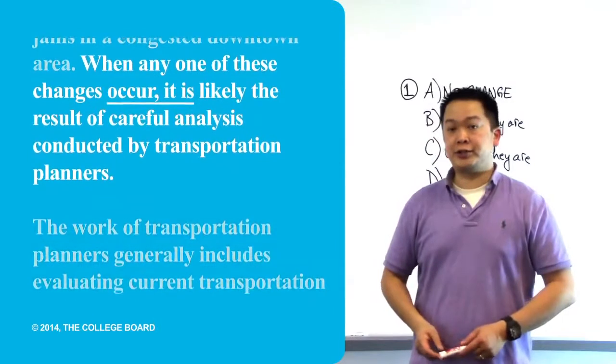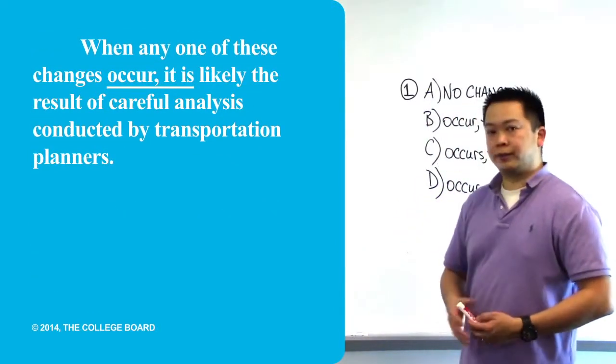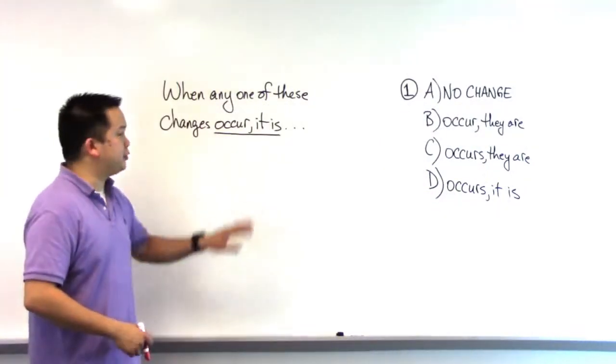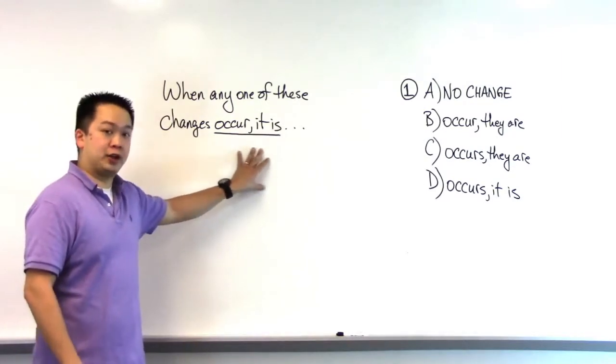So for this particular sentence here, what we have is, when any one of these changes occur, it is likely. So now that we have the sentence, Princeton Review students are going to start to attack this problem by following a specific methodology.